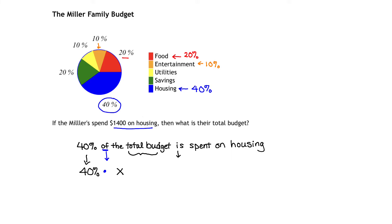"Is" in math translates to equals. And "spent on housing" — housing is the key word — how much is spent on housing? That's $1,400. So if we know that 40% of the total budget is spent on housing, we can rewrite that statement and say 40% times X equals 1,400, the amount spent on housing.